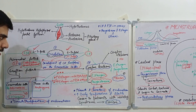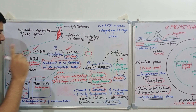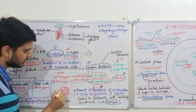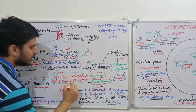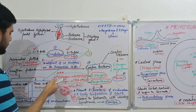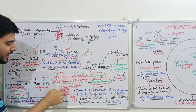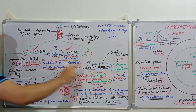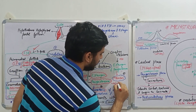After the LH surge, LH receptors develop on granulosa cells and there is synthesis of both estrogen and progesterone. Also, the secondary oocyte is ovulated, and the remaining cells of the Graafian follicle deposit a protein called lutein protein in the presence of LH. This lutein protein converts the remaining cells of the Graafian follicle into the corpus luteum. The corpus luteum then synthesizes both estrogen and progesterone, because LH receptors are developed on the granulosa cells.